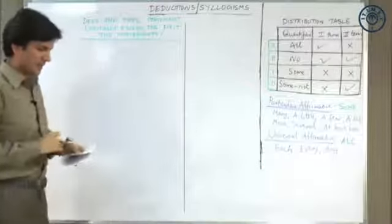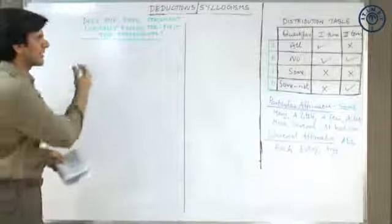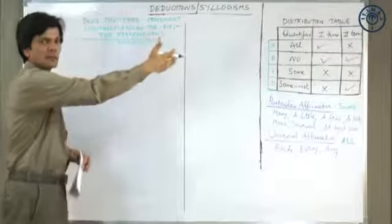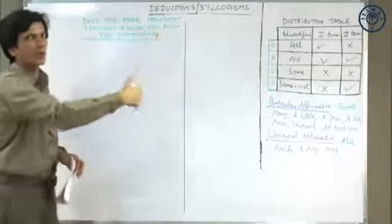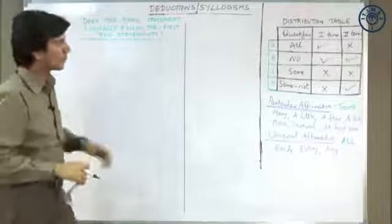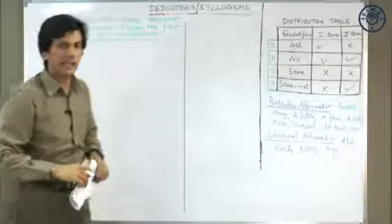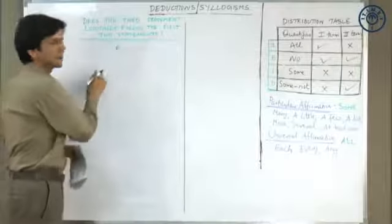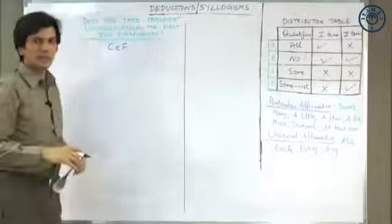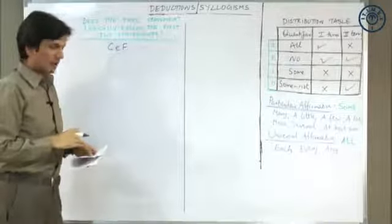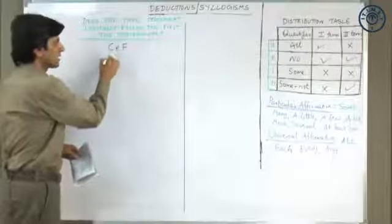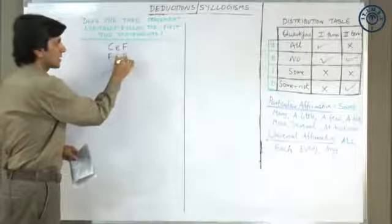The first statement says no covered is a fighter. Let's try using the understanding of alphabetically representing our statements in the form of vowels A, E, I, O. Since this talks about no covered is a fighter, which is universal negative, we represent it with E. No covered is a fighter — that's premise 1. Premise 2: some fighters are brave hearts. Some is represented by I.